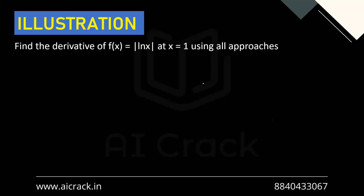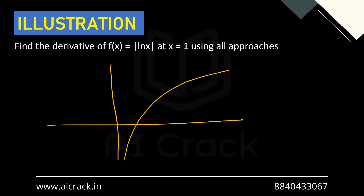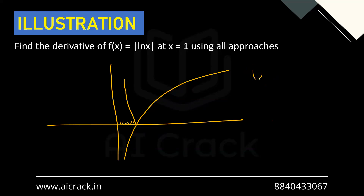Method three is the graphical method. We plot |ln x|. The graph of ln x is reflected above the x-axis (mirror image concept for the negative portion) to get |ln x|. Looking at x = 1, on the right-hand side the slope is positive, and on the left-hand side the slope is negative. Since they're not equal at x = 1, the derivative does not exist there. These three methods all confirm non-differentiability at x = 1.